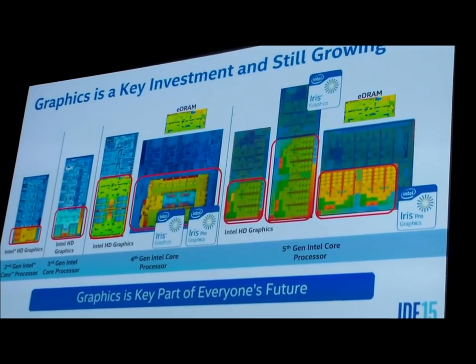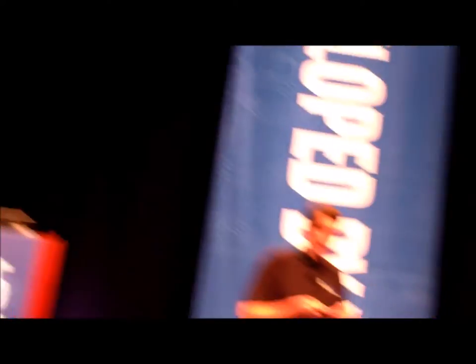In the old days we had a single SKU, then maybe two with GT1 and GT2, and then we introduced GT3. We're adding more and more SKUs and changing the architecture to scale up to more points, in order to address the full spectrum of power envelopes and form factors.